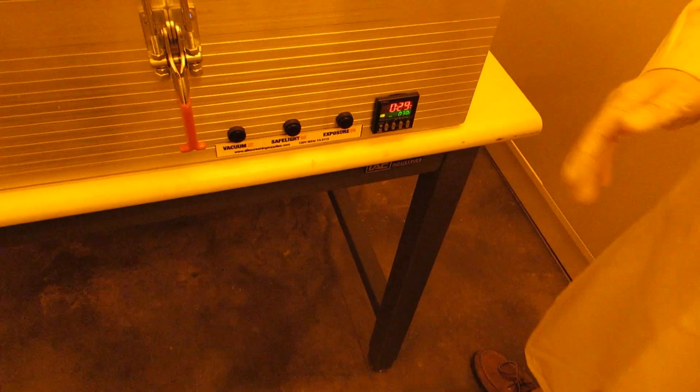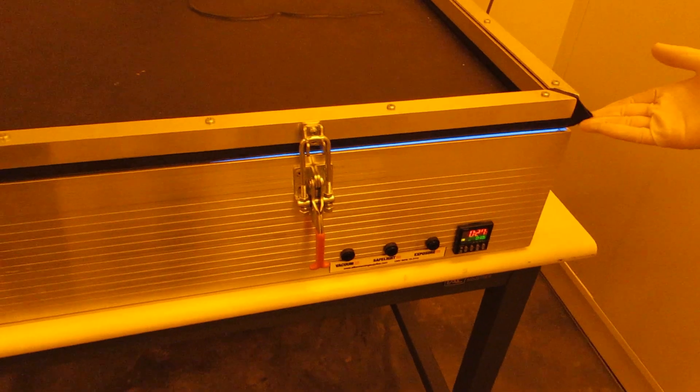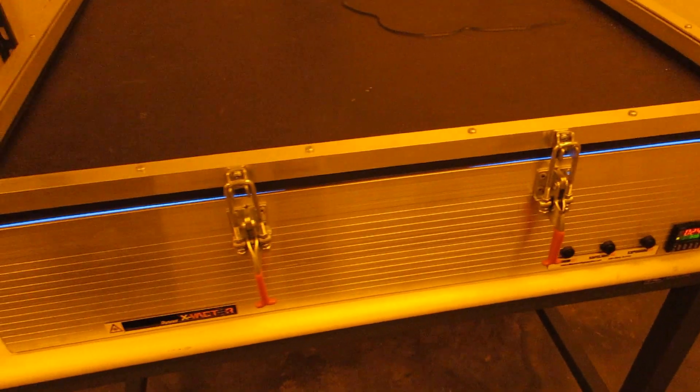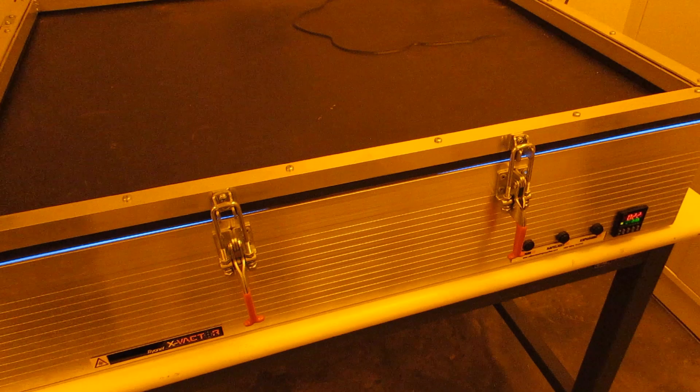Now we will expose. As you can see, the ultraviolet light is being shown underneath, going through the clear part of the mask, hardening the photoresist.